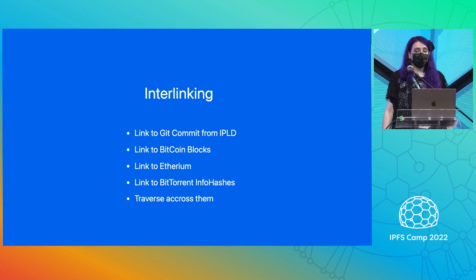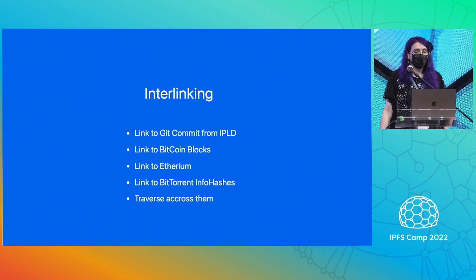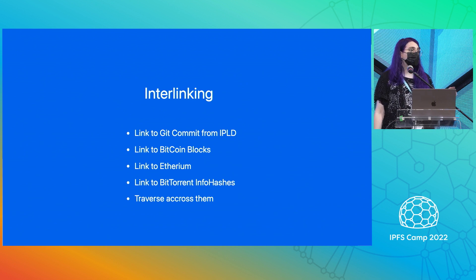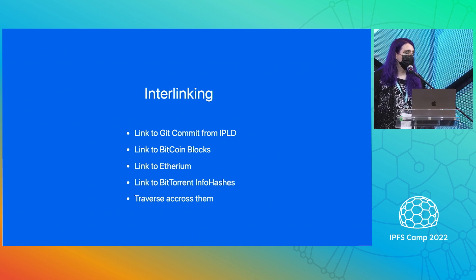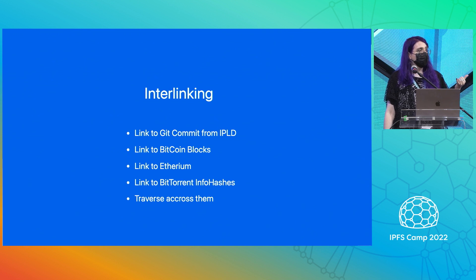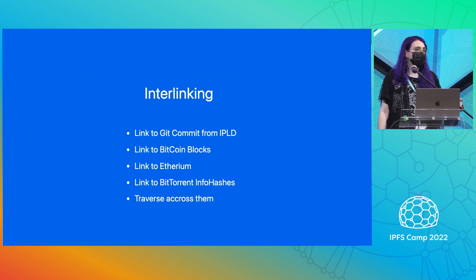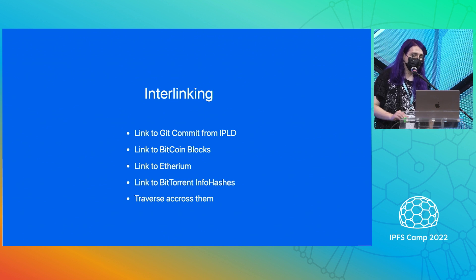One cool thing about IPLD being decoupled from IPFS is that it can be used to represent all sorts of linked data by adding new codecs. This enables things like linking to a Git commit from IPLD using the regular CID interface, or linking to Bitcoin blocks, Ethereum smart contracts or NFTs, or entire BitTorrent trees, all in the same way. You can use the same traversal and lensing techniques over any of these approaches. All you need is a custom link system that knows how to resolve CIDs for, say, a Bitcoin block to the actual data, and codecs that can encode to and from all of these native types.